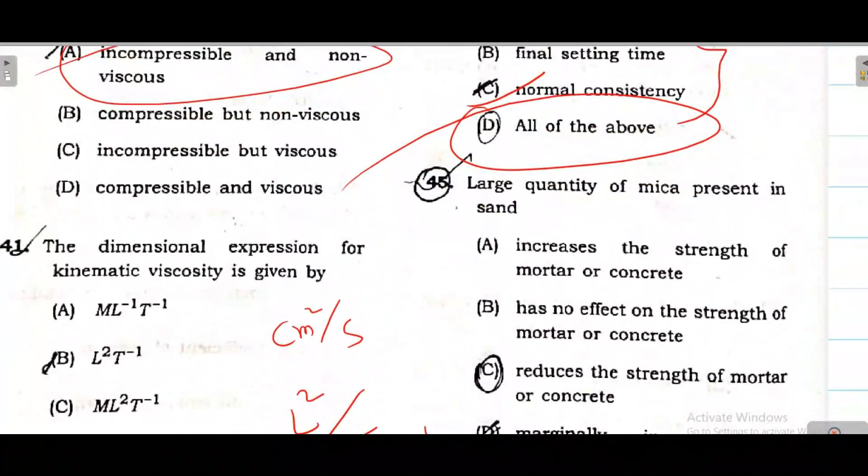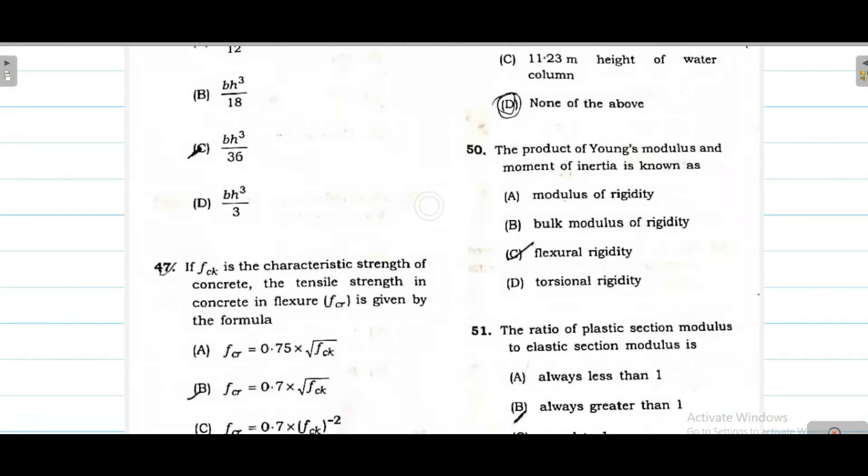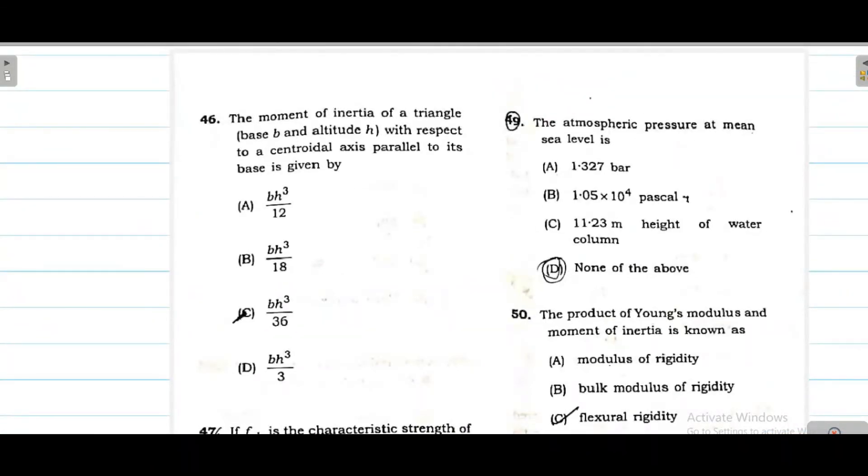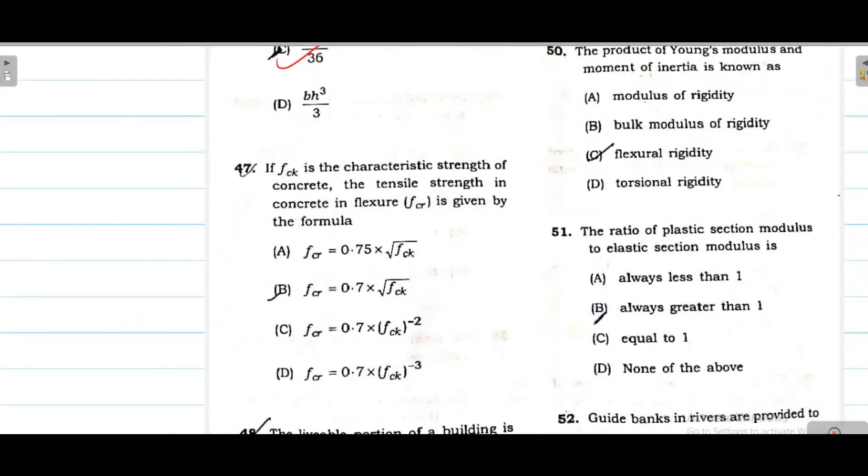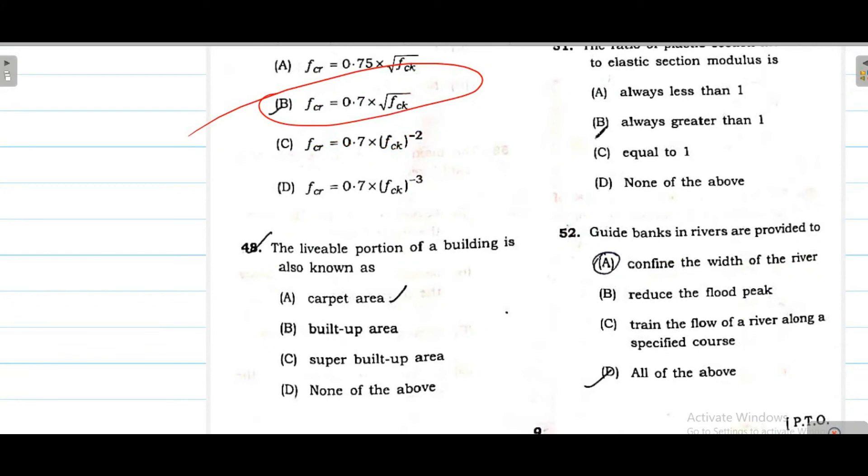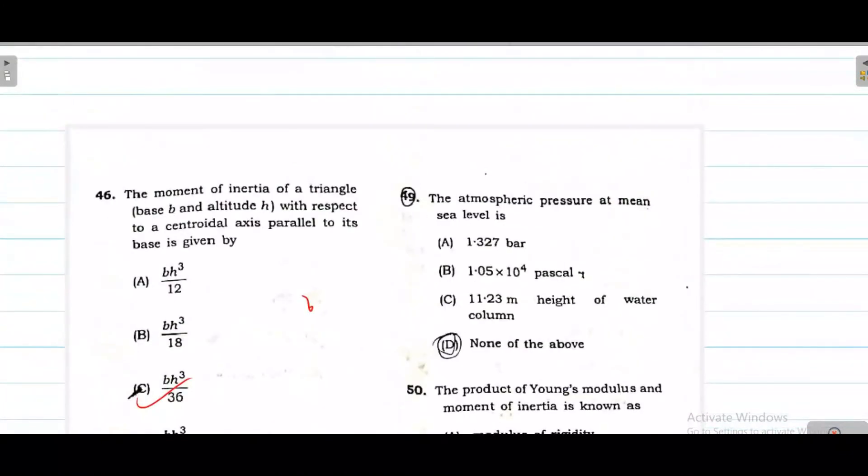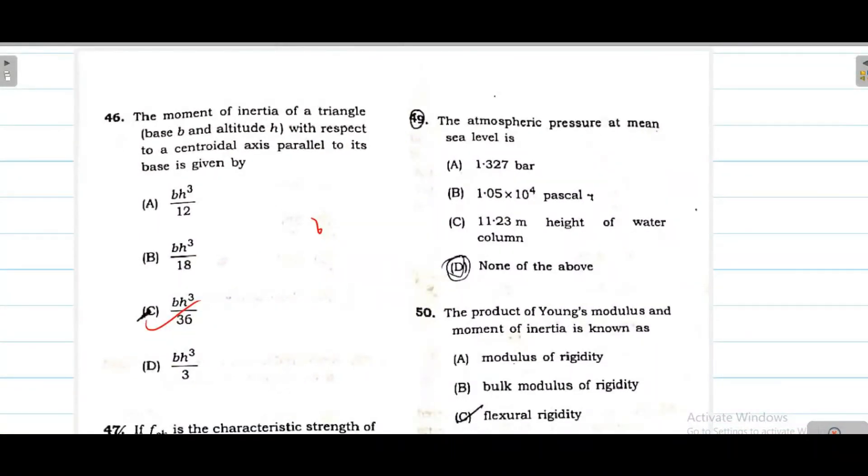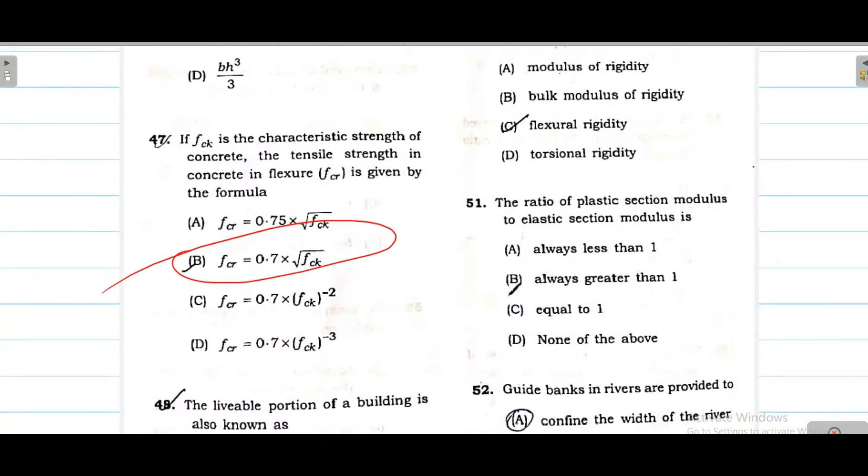Question 42 - argillaceous rock, basically clay or lime. Option C correct answer. Next - ordinary brick size as per BIS or ISS - answer is 19 into 9 into 9 centimeter. Then Vicat apparatus, basically for normal consistency measurement - normal consistency, initial setting time, final setting time. So option D is correct. Question 45 - large quantity of mica. Mica is present in sand. Obviously mica in concrete or mortar will reduce strength. Because mica reduces strength. So option C is correct. Next question 46 - moment of inertia above centroid - centroid is BS cube by 36 or BS cube by 12. Next question 47 - F critical is 0.7 root over FCK. Next - the livable portion of a building is carpet area. Question 49 - atmospheric pressure at mean sea level is 1.0325 bar, 1.05 into 10 to the 5 pascal. So option D. Question 50 - plastic section modulus to elastic section modulus is obviously greater than 1. Plastic section modulus is always greater than elastic section modulus.